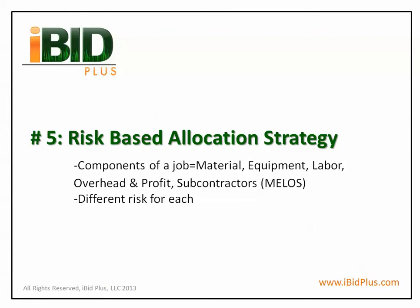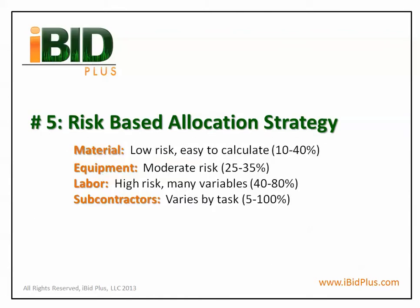The last strategy is called the risk-based allocation strategy. This is when a business uses the components of the job — material, equipment, labor, overhead and profit, and subcontractors — and applies a different risk markup for each. For example, material being low risk is easy to calculate and therefore should be marked up at a lower rate. Equipment carries moderate risk, labor is high risk with many variables, and subcontractors vary by task.